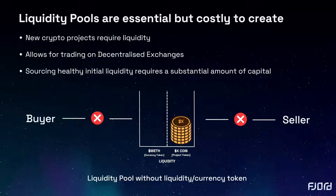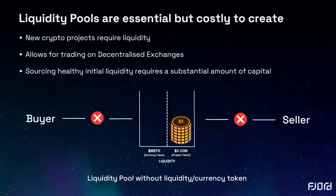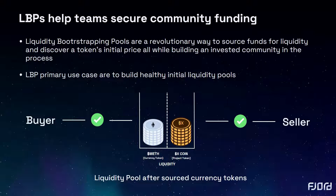If you want to start a new cryptocurrency project and create a market for your token, you need to make it available for people to buy and sell on a decentralised exchange like Balancer or Uniswap. In order to allow trading to occur, you require a healthy amount of liquidity, such as Ethereum or a stablecoin, to trade against the project token. Otherwise, trading is unable to take place and there is no market. To make your new token tradable and to fund your project, you need liquidity — that's where liquidity bootstrapping pools come in.